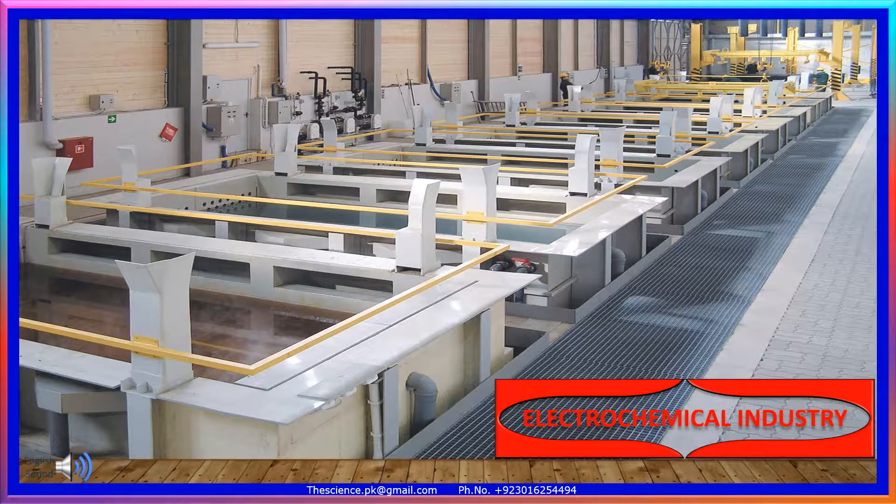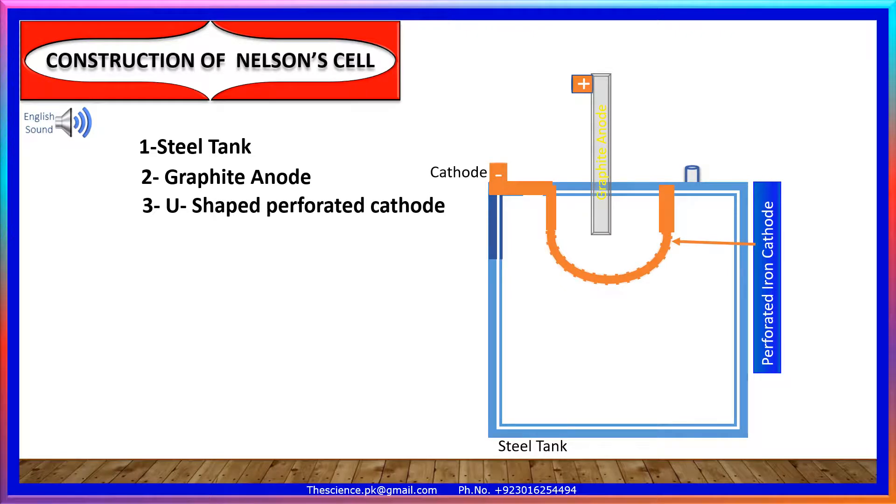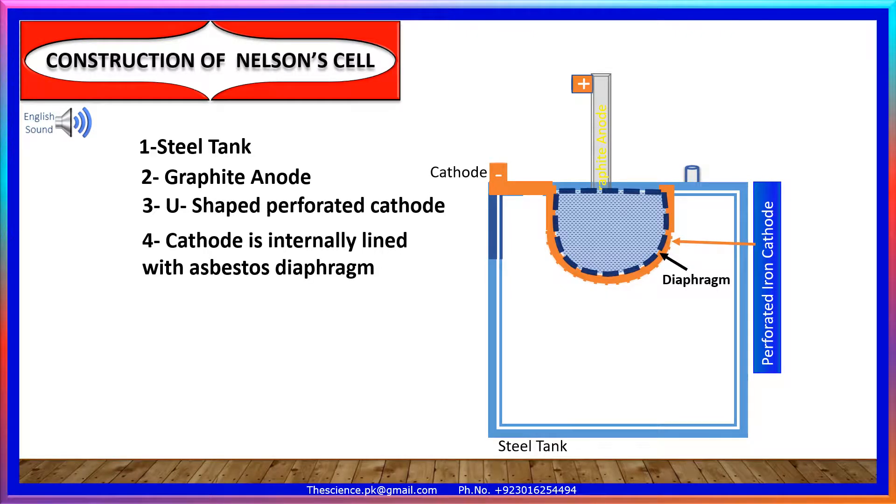Electrochemical industry. Construction of Nelson cell: Steel tank, Graphite anode, U-shaped perforated cathode. Cathode is internally lined with asbestos diaphragm.